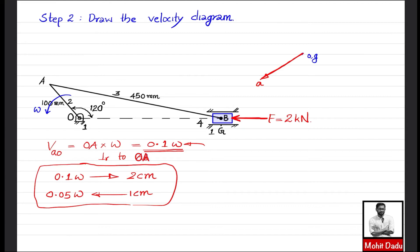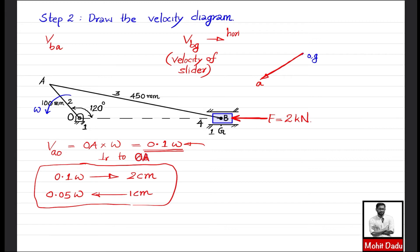Next, locate point 'b'. Point B is at the end of the connecting rod, so we need two velocity vectors: V_BA (perpendicular to link AB, unknown magnitude) and V_BG, the actual velocity of the slider relative to ground. V_BG direction is horizontal (along the slider's line of motion), with unknown magnitude. We draw a horizontal line through the zero-velocity point to represent the direction of V_BG.